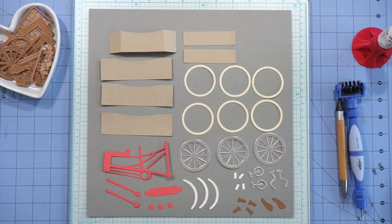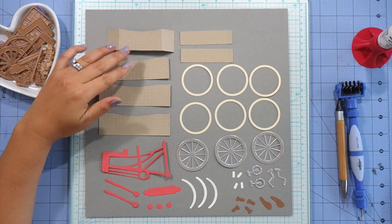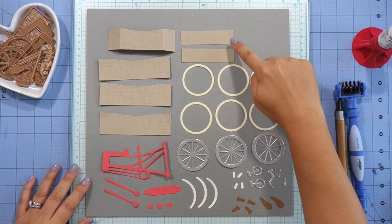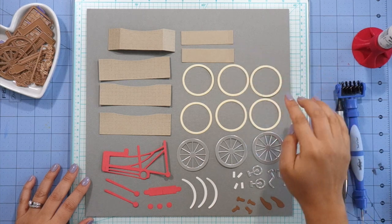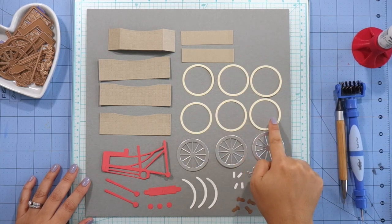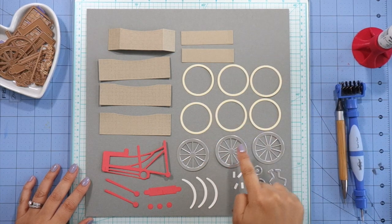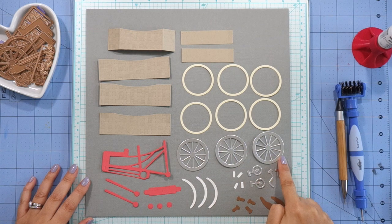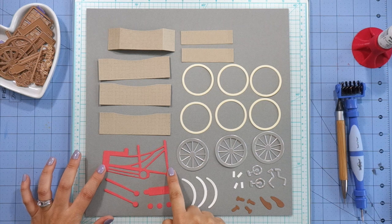Okay so here are all my pieces die cut. I cut that basket piece with the basket weave texture four times. That piece up there I cut out twice that will be for the bottom of the basket, and the tires I cut out of cream cardstock a total of six times. I cut the wheel spokes from silver cardstock a total of three times.